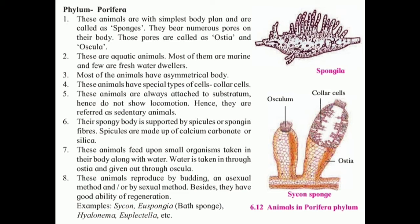These animals reproduce by budding, asexual method, or bisexual method. Besides, they have a good ability of regeneration. Examples include Sycon, Euspongia, Hyalonema, and Euplectella.